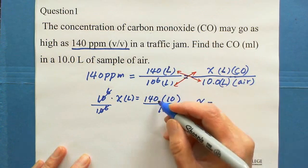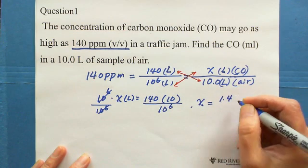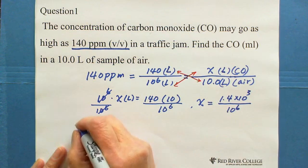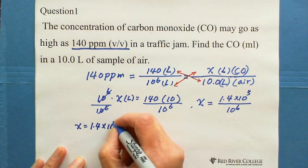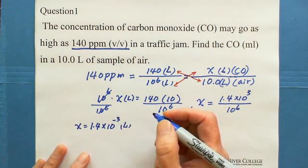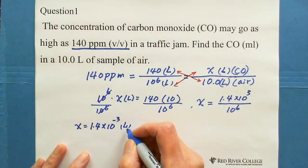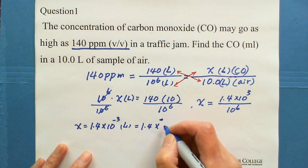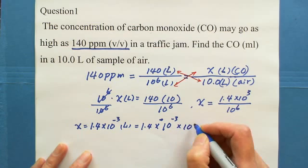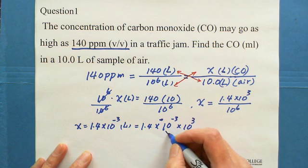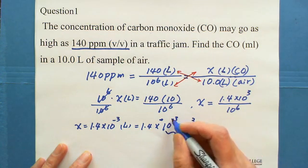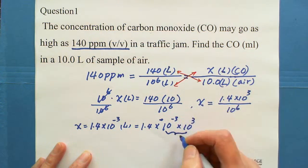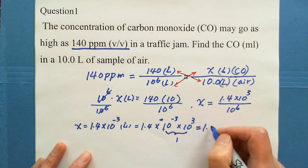Looking for X, we divide both sides by 10 to the 6 — this cancels out. So X equals 140 times 10. In scientific notation, that's 1.4 times 10 to the 3, divided by 10 to the 6, which gives X equals 1.4 times 10 to the negative 3. But the question asks for milliliters, so from liters to milliliters we multiply by 1000, which is 10 to the 3. The 10 to the negative 3 and 10 to the 3 cancel out, giving 1.4 milliliters.